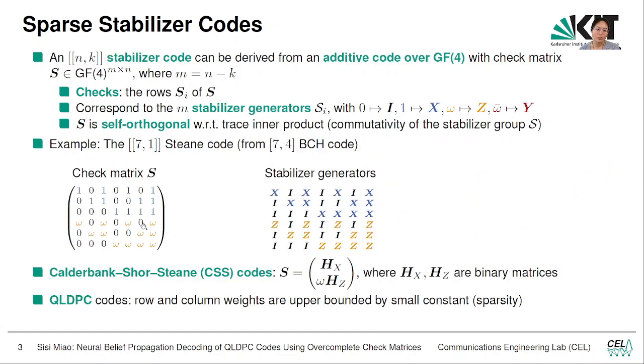Okay, let's look at the example code. This is the [[7,1]] Steane code constructed from the [7,4] BCH codes, which are classical. You can see that this is the check matrix of this code which has six rows. This corresponds to the six stabilizer generators which generate the stabilizer group.